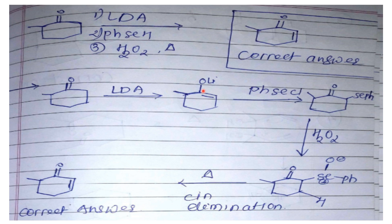This enolate will attack on the selenium, then will form this compound. In presence of H₂O₂, we will be getting this selenium oxidized, and then this oxidized selenium oxide will give syn elimination in presence of thermal conditions. We will be getting this alpha-beta unsaturated ketone. So this is a functional group transformation reaction, and the correct answer is this one.